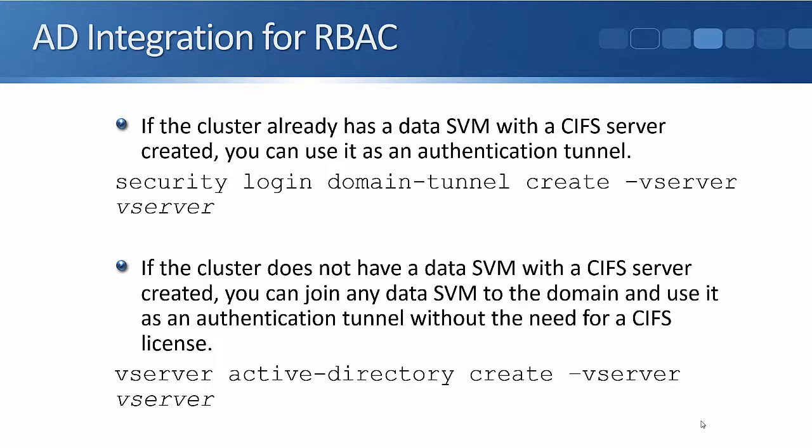If the cluster already has a data SVM with CIFS configured, then you can use it as the authentication tunnel — the command for that is 'security login domain-tunnel create' and then the vserver name. But if the cluster does not have a data SVM with a CIFS server created already, then you can join any data SVM to the domain and use it as the authentication tunnel without the need for a CIFS license. To do that, the command is 'vserver active-directory create' and then the vserver name. So let's have a look at how to configure role-based access control and Active Directory integration for administrator authentication in the lab.